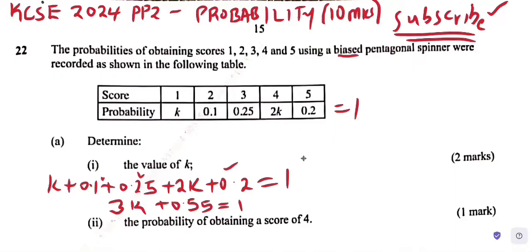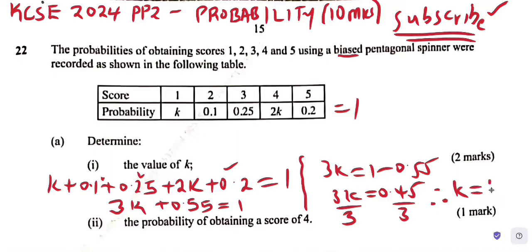Move 0.55 to the other side: 3k equals 1 minus 0.55, 3k equals 0.45. Divide by 3, k equals 0.15. Here is the answer for part (i).